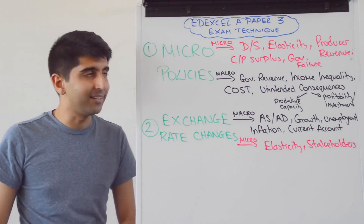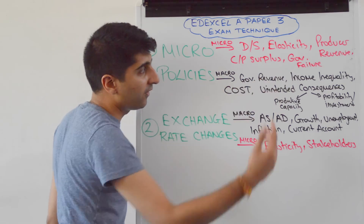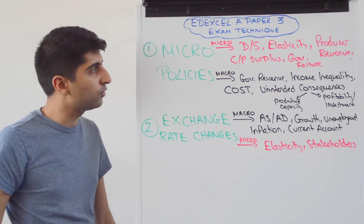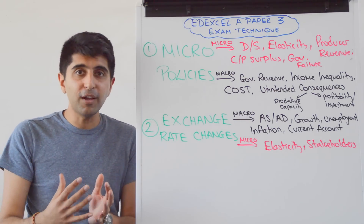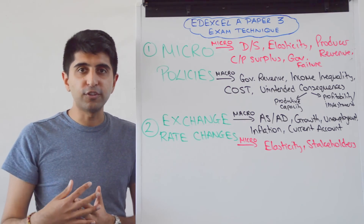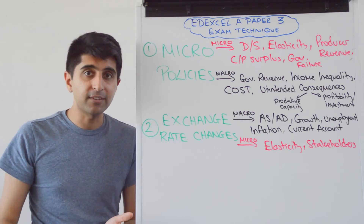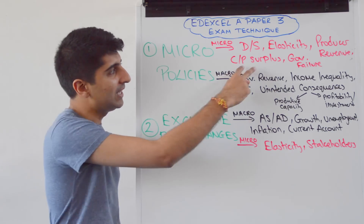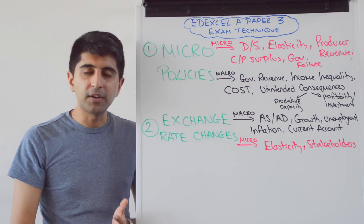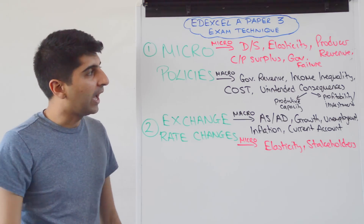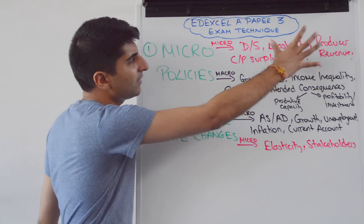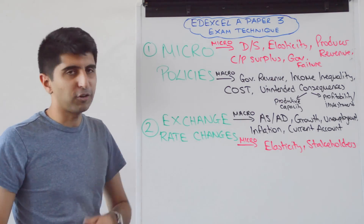For evaluation, you might be questioning the elasticity of demand, looking at the impact on producer revenues — for example, how a tax will burden producers and reduce their producer revenue. You can also look at consumer burdens of an indirect tax. You can look at the impact on consumer and producer surplus from a subsidy, a tax, minimum price, maximum price. You can bring in the idea of government failure, things like black markets from excessive regulation, from maximum prices or minimum prices being set, or indirect taxes.